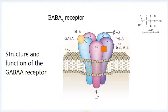Upon activation, the GABAA receptor selectively conducts chloride ions through its pore, resulting in hyperpolarization of the neuron.